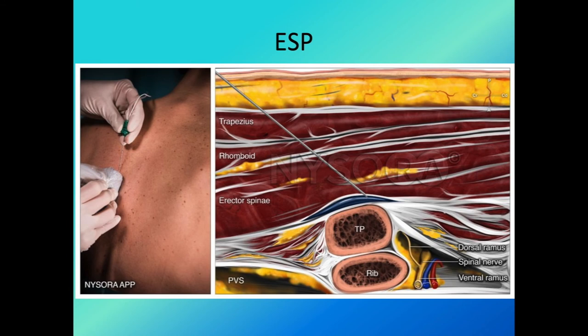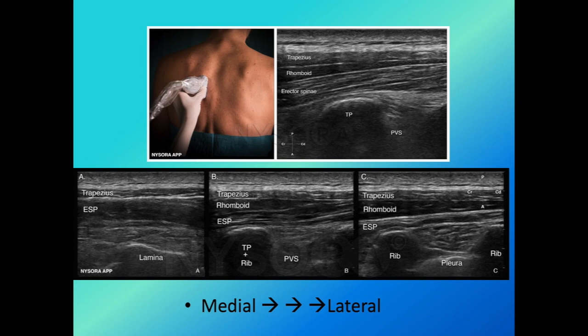The needle is inserted in-plane from a cephalad-to-caudad direction for the ESP block. When scanning from medial to lateral, if the probe is too lateral you see rounded hypoechoic rib structures with the pleura sliding in between. If too medial, you lose the transverse process and see the vertebral lamina. The probe must be placed exactly above the transverse process for the LA to have any chance of spreading to the ventral and dorsal rami and possibly the paravertebral space.